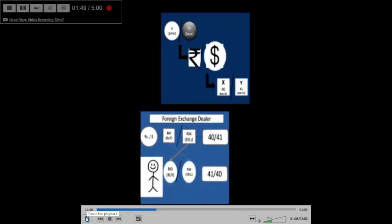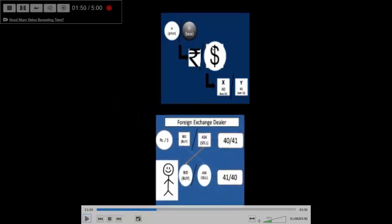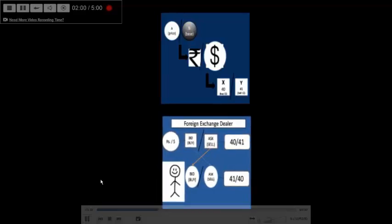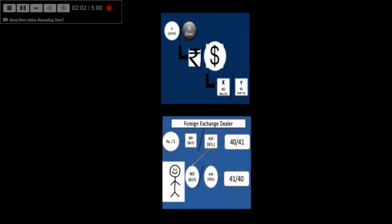We are going to discuss all four possible cases between two currencies: buying dollar, selling dollar, buying rupee, and selling rupee. Let's begin first with the dollar.